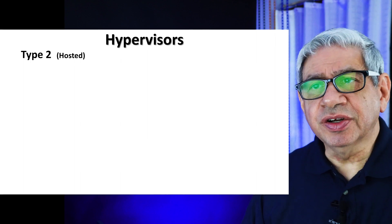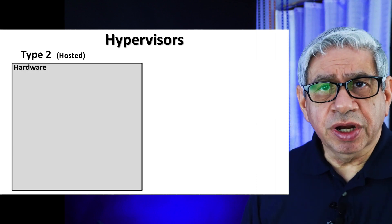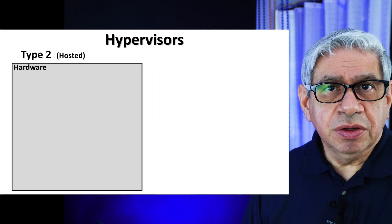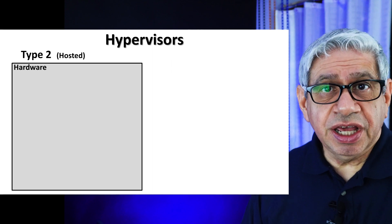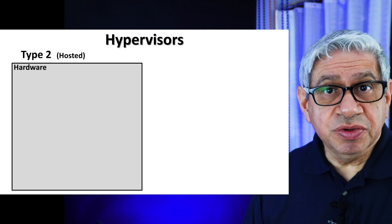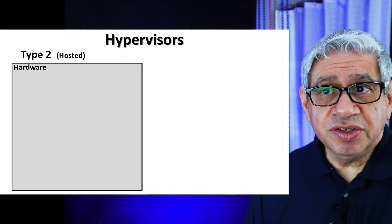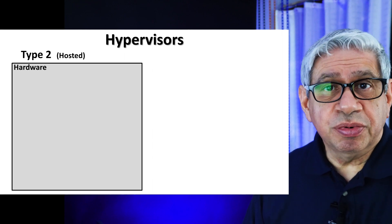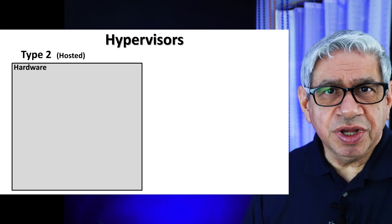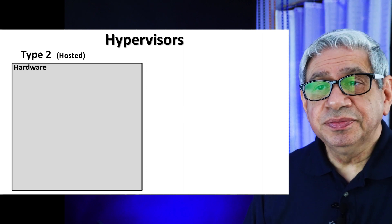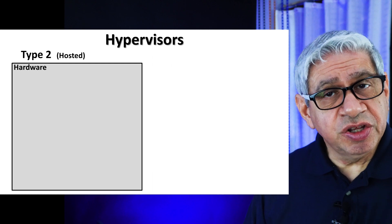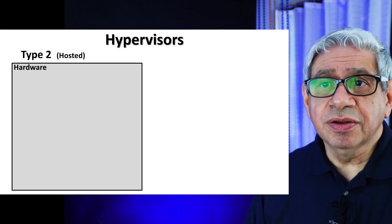In a hosted hypervisor, we have the hardware — the hardware is the PC, which has whatever processor you have, whatever number of actual threads or CPUs is on that processor, your memory, all your peripherals — everything that makes up what you normally refer to as your computer or PC. Or if you're going to set this up as a server, it could be a separate server that does this as well.